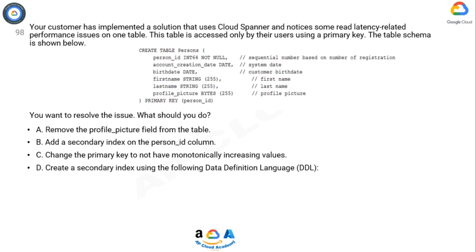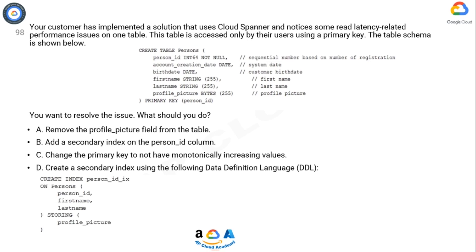A. Remove the profile_picture field from the table. B. Add a secondary index on the person_id column. C. Change the primary key to not have monotonically increasing values. D. Create a secondary index using the following data definition language (DDL).